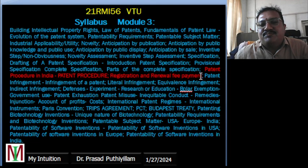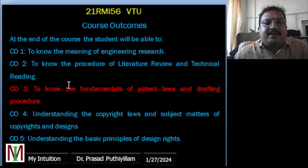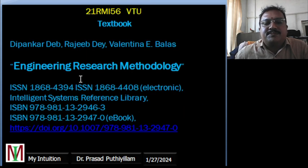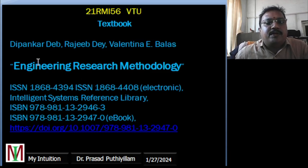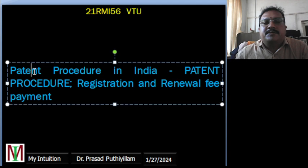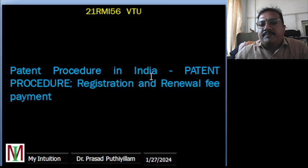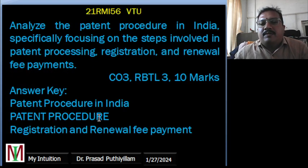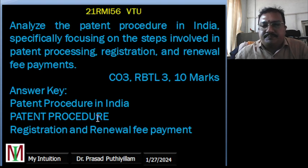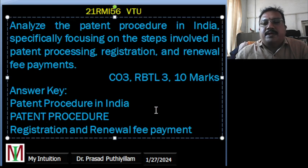Okay, the syllabus is given; I have highlighted this much portion. I am covering this particular class video connected to CO3 of the course outcome given in the syllabus of the Research Methodology and Intellectual Property Rights syllabus. This particular textbook you need to download and go through in detail, covering the patent procedure, registration and renewal fee payment, with the introduction to patent procedure in India. You can write 3 terms for 10 marks.